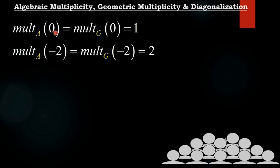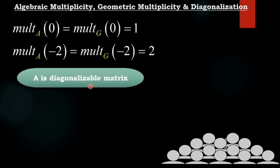For both eigenvalues, the geometric and algebraic multiplicities are equal: algebraic multiplicity for 0 = geometric multiplicity for 0 = 1, and algebraic multiplicity for −2 = geometric multiplicity for −2 = 2. Therefore, A is a diagonalizable matrix. Thank you friends.